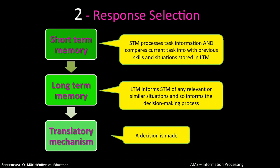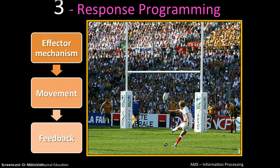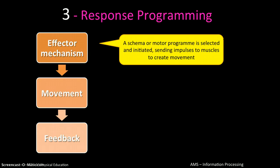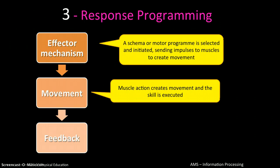As a result of comparing previous experiences with the recognition of the current situation, you translate that into a decision — this is the translatory mechanism. Having made a decision, the effector mechanism selects the appropriate motor program. For example, having decided to run, you select the motor program for running with a rugby ball, initiate impulses to the relevant muscles, and movement — the actual muscular action — follows. At this point, you are running.